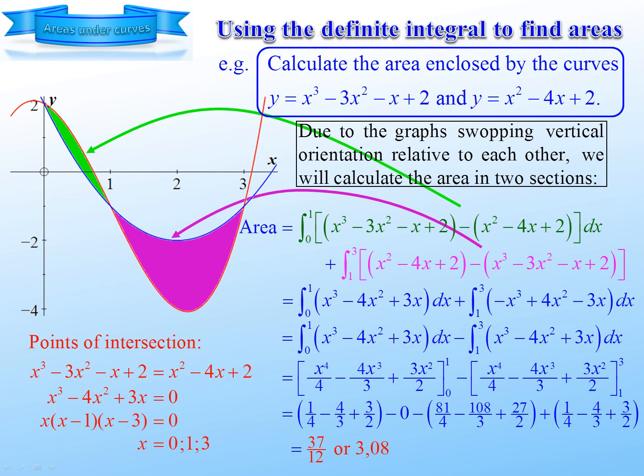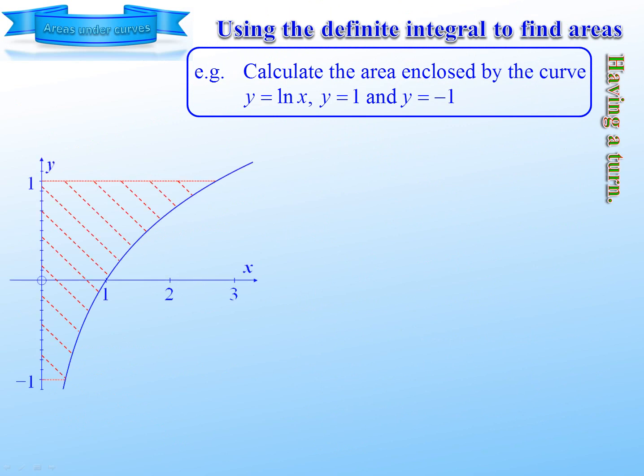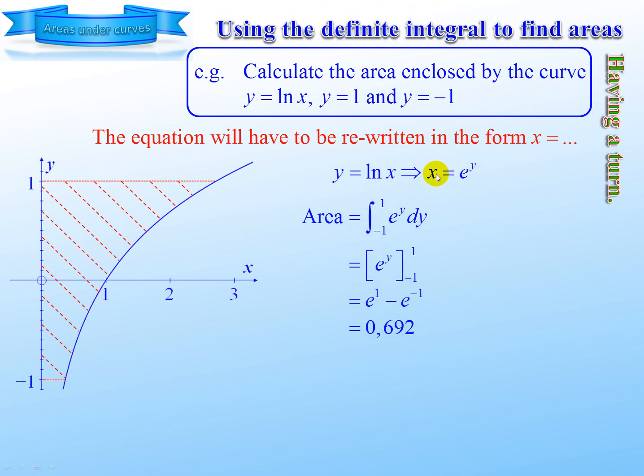Now it's quite possible to be given a graph where we have to find the area between it and the y-axis. This is like turning it on its side. The only difference is we're going to treat it in the same way, but we're going to have to write that graph in the form x equals. So if we have y equals ln x, it means x equals e to the y. Logarithmic form, exponential form. So now the area is from negative 1 to 1 of e to the y. Integrate e to the y, still e to the y. Substitute 1, subtract, substitute negative 1. And it works out at 0.692.